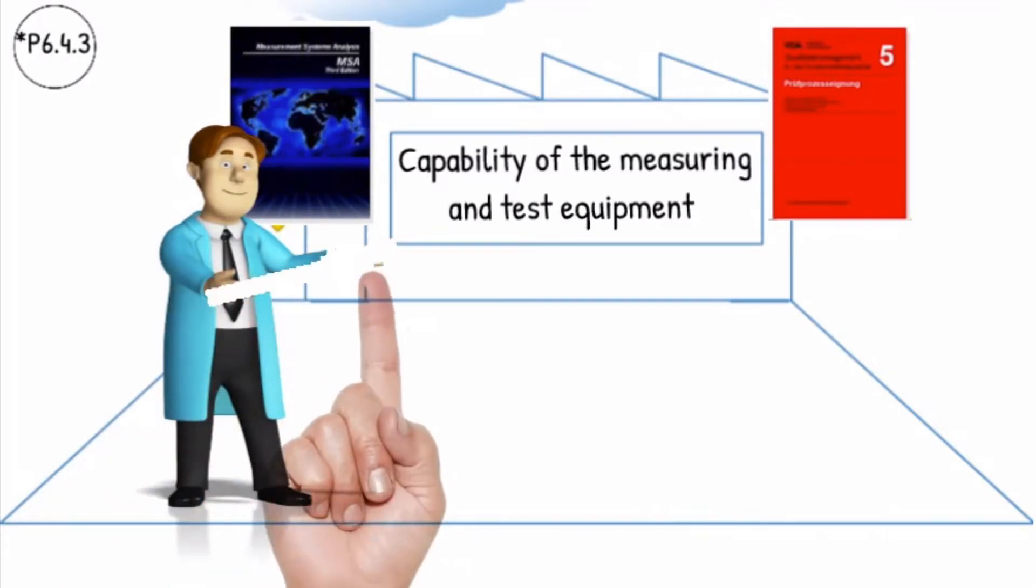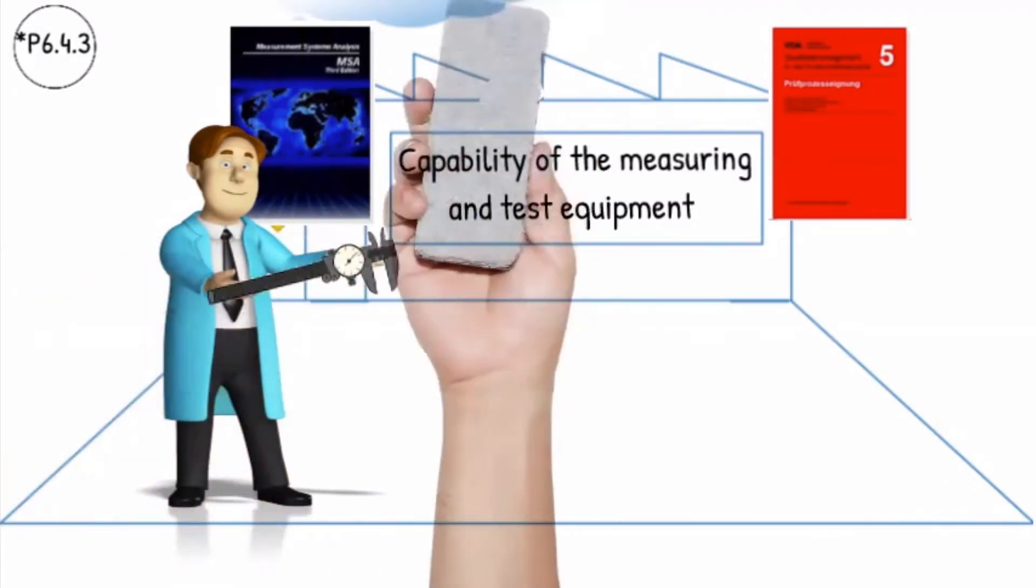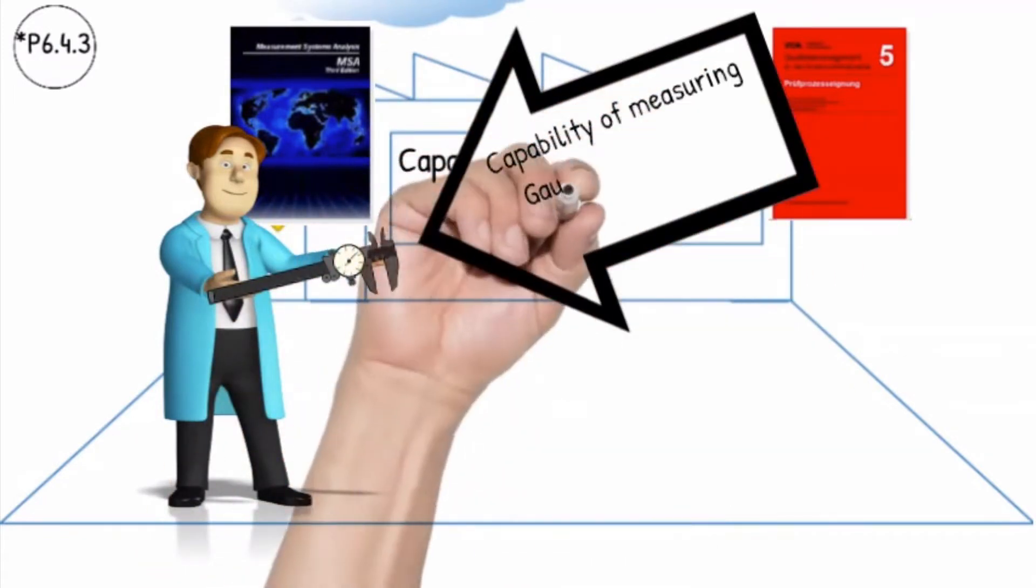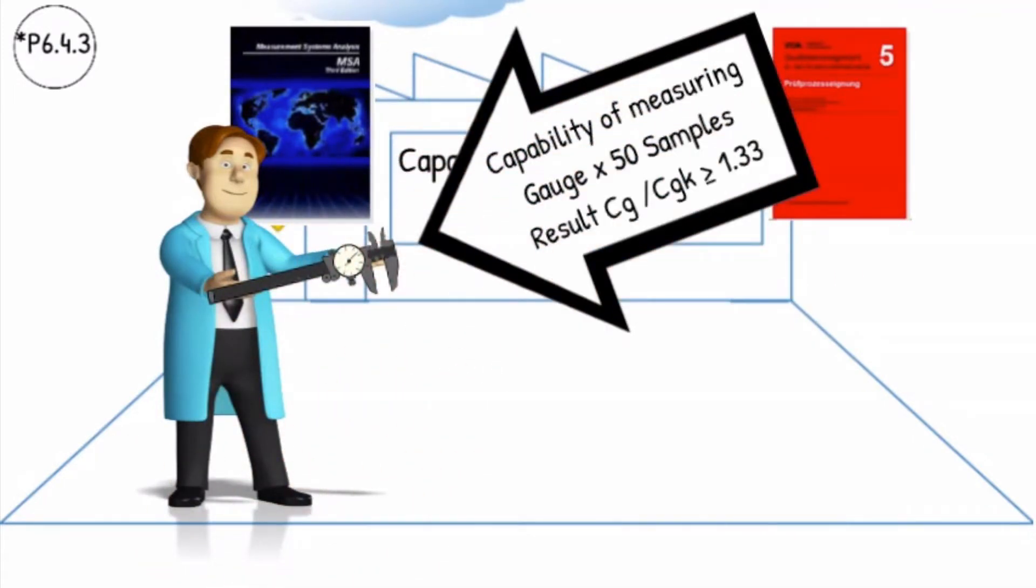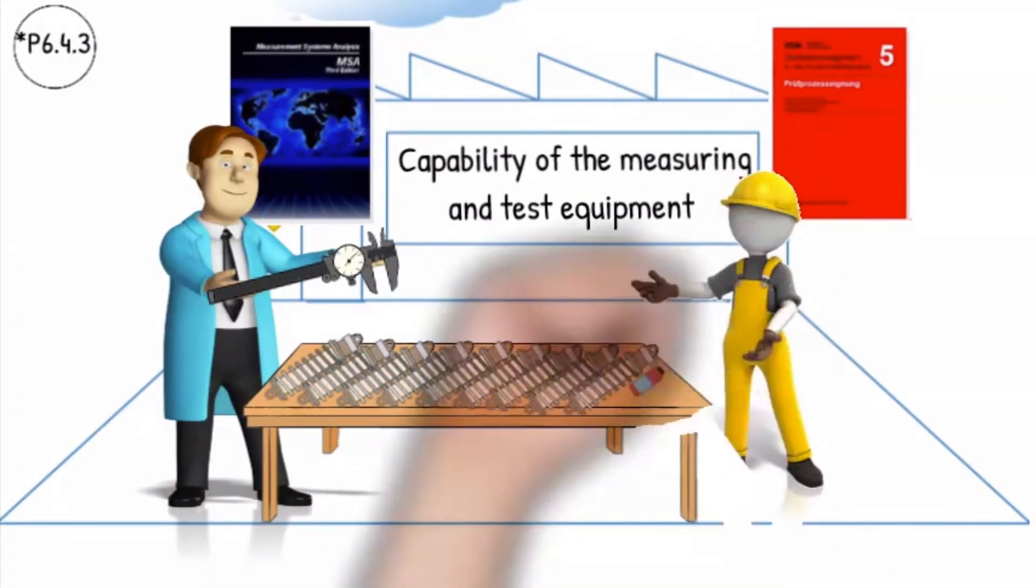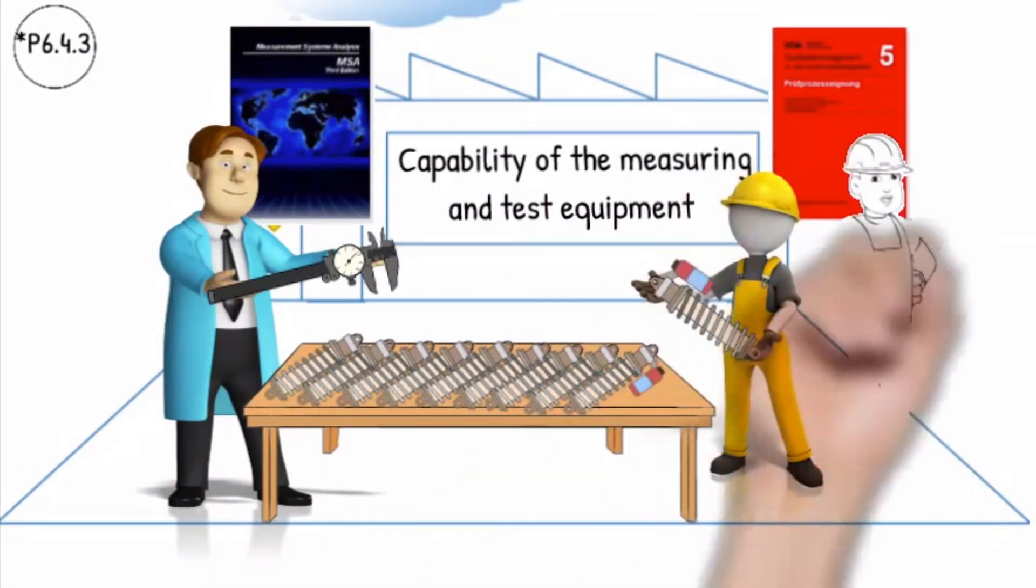The first step is to determine the capability of the test equipment. You need to measure 50 samples and the CG and CGK result must be equal to or larger than 1.33. The second step is to do a Study 2 evaluation to determine the repeatability and the reproducibility study which includes the operator influence.